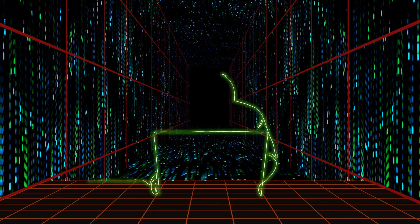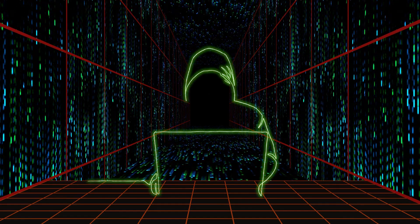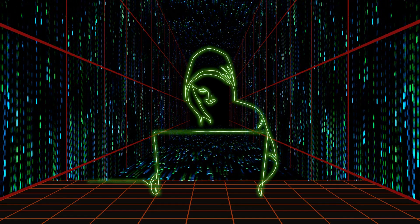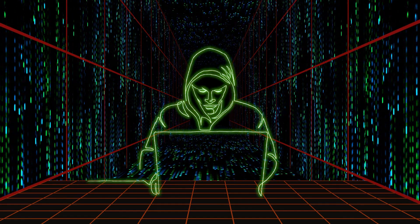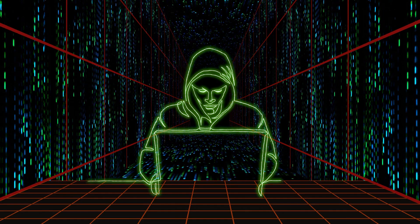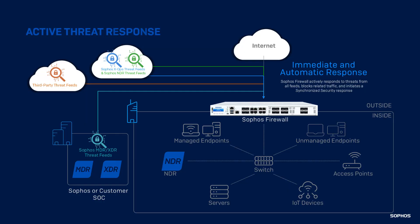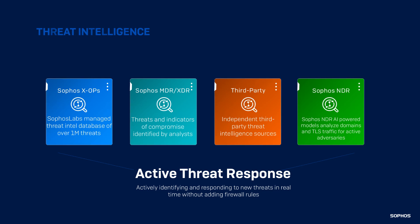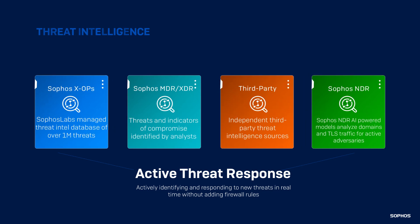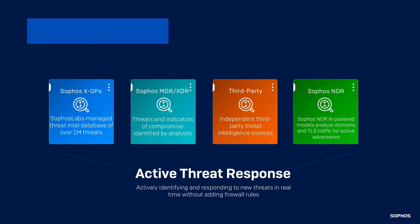Adversaries continuously adapt their techniques using hands-on keyboard attacks and AI-assisted methods to penetrate network defenses. The power of Active Threat Response lies in its ability to coordinate defenses in real time without manual intervention, drawing on multiple threat intelligence sources to identify active adversaries operating on the network.